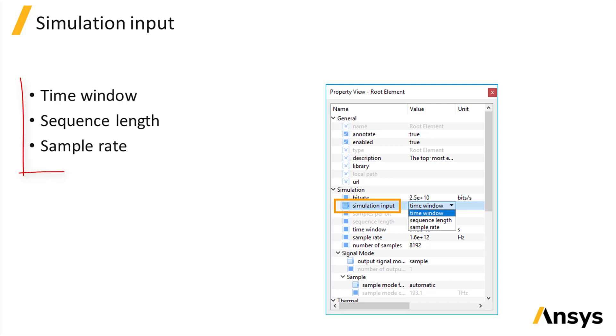The options are sequence length, time window, and sample rate. Refer to the same Knowledge Base page below the video for more details about these options.